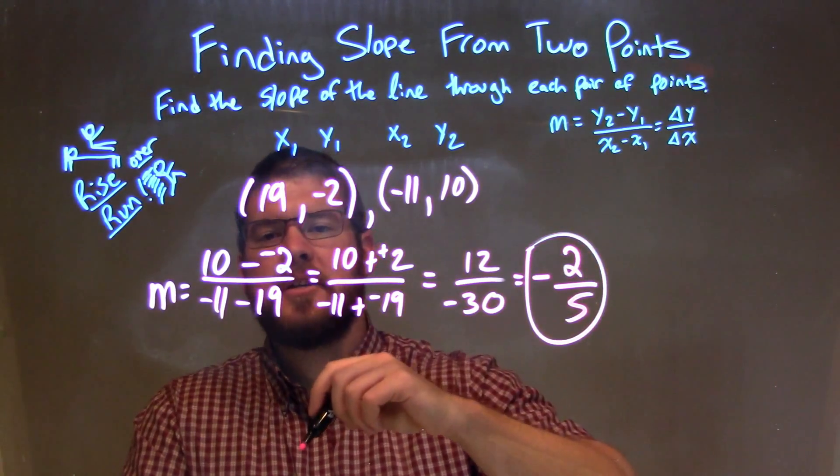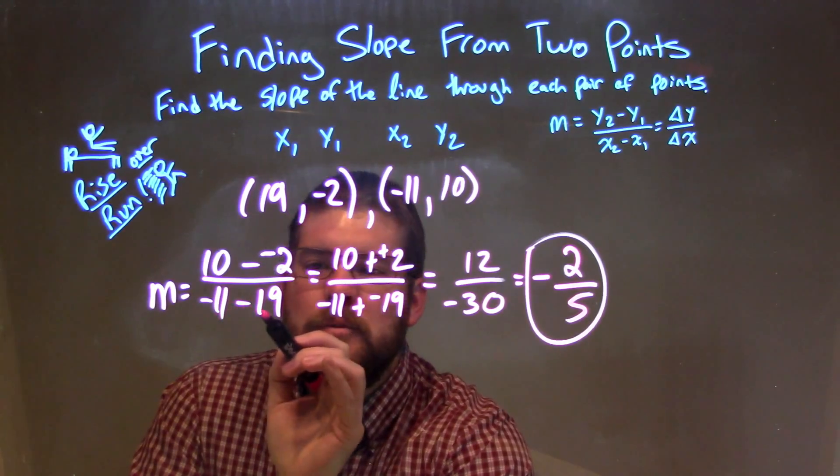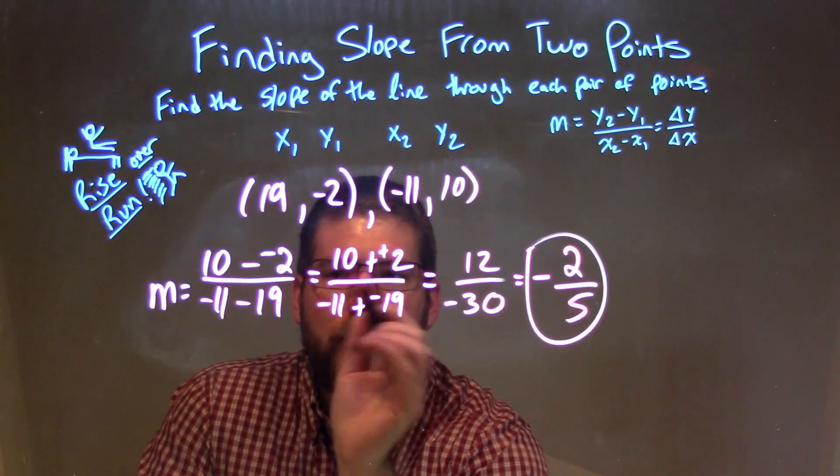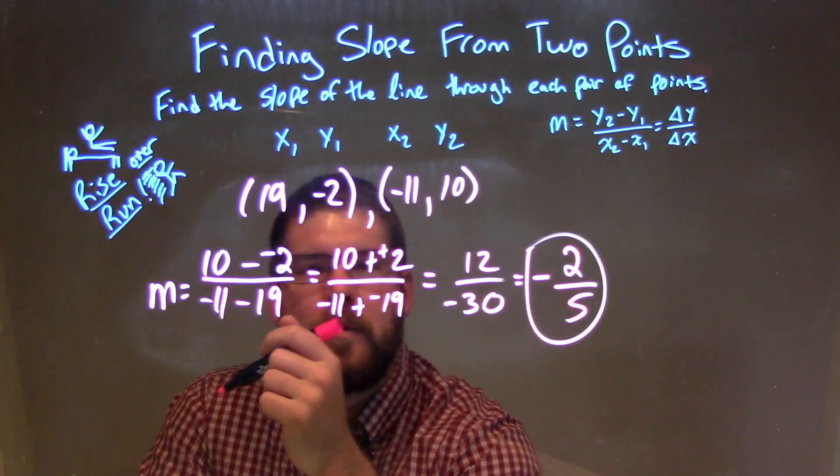We follow our slope formula, change of y over change of x, and we have y2 minus y1, over x2 minus x1. I wrote my minus a negative would be plus a positive, and my subtraction here would be plus a negative.